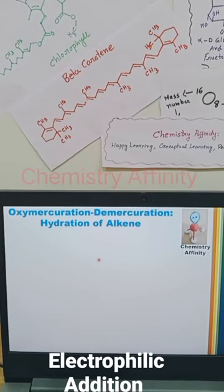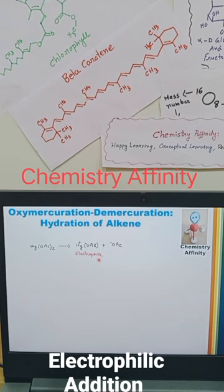Let's understand the mechanism of oxymercuration and demercuration of alkene. For this reaction we use mercuric acetate, which gives Hg²⁺. This part acts as an electrophile.